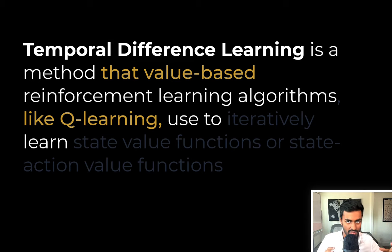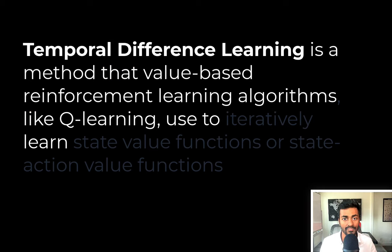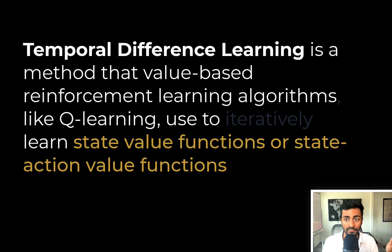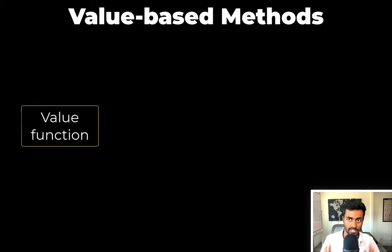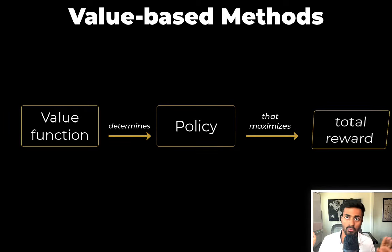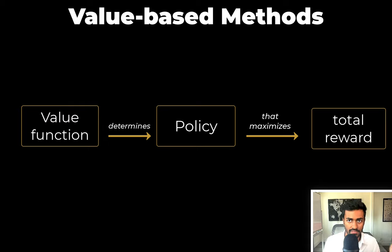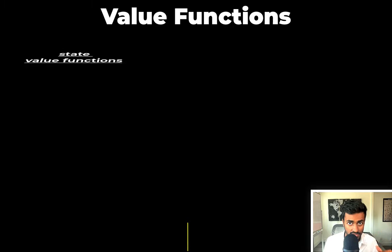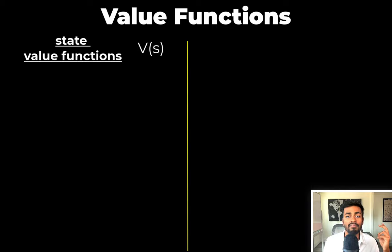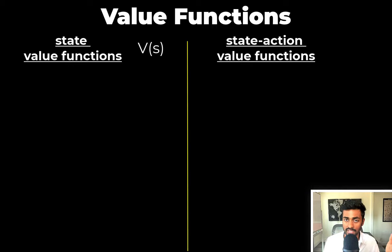Coming back to our definition, I hope the value-based reinforcement learning term makes more sense. Let's peel off another layer. Temporal difference learning is a method that value-based reinforcement learning algorithms, like Q-learning, use to learn state value functions or state action value functions. Value-based methods determine a value function which is used to determine the policy that maximizes the total reward. Depending on the inputs, there are two types: a state value function, where the input is a state, and a state action value function, where the input is a state and an action.